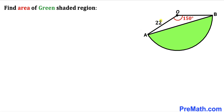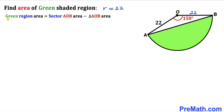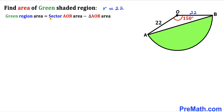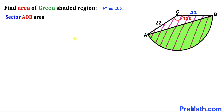Reverting our attention back to the given problem: the radius of this sector is 22, so AO is 22 and OB is 22 units as well. Therefore, radius r equals 22. We can observe that the area of the green shaded region equals the sector AOB area minus the area of triangle AOB. So our task is to calculate both the sector AOB area and the triangle AOB area.